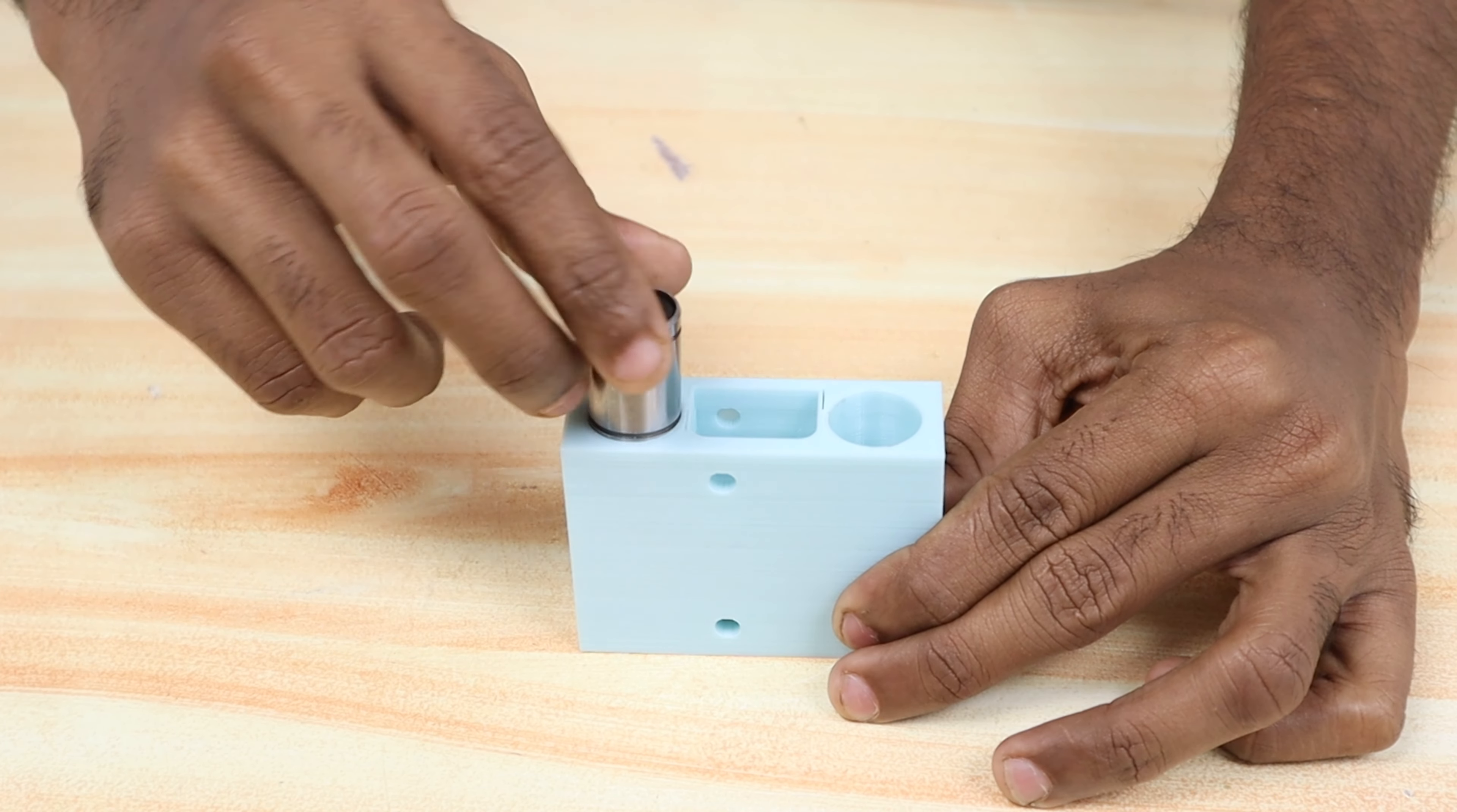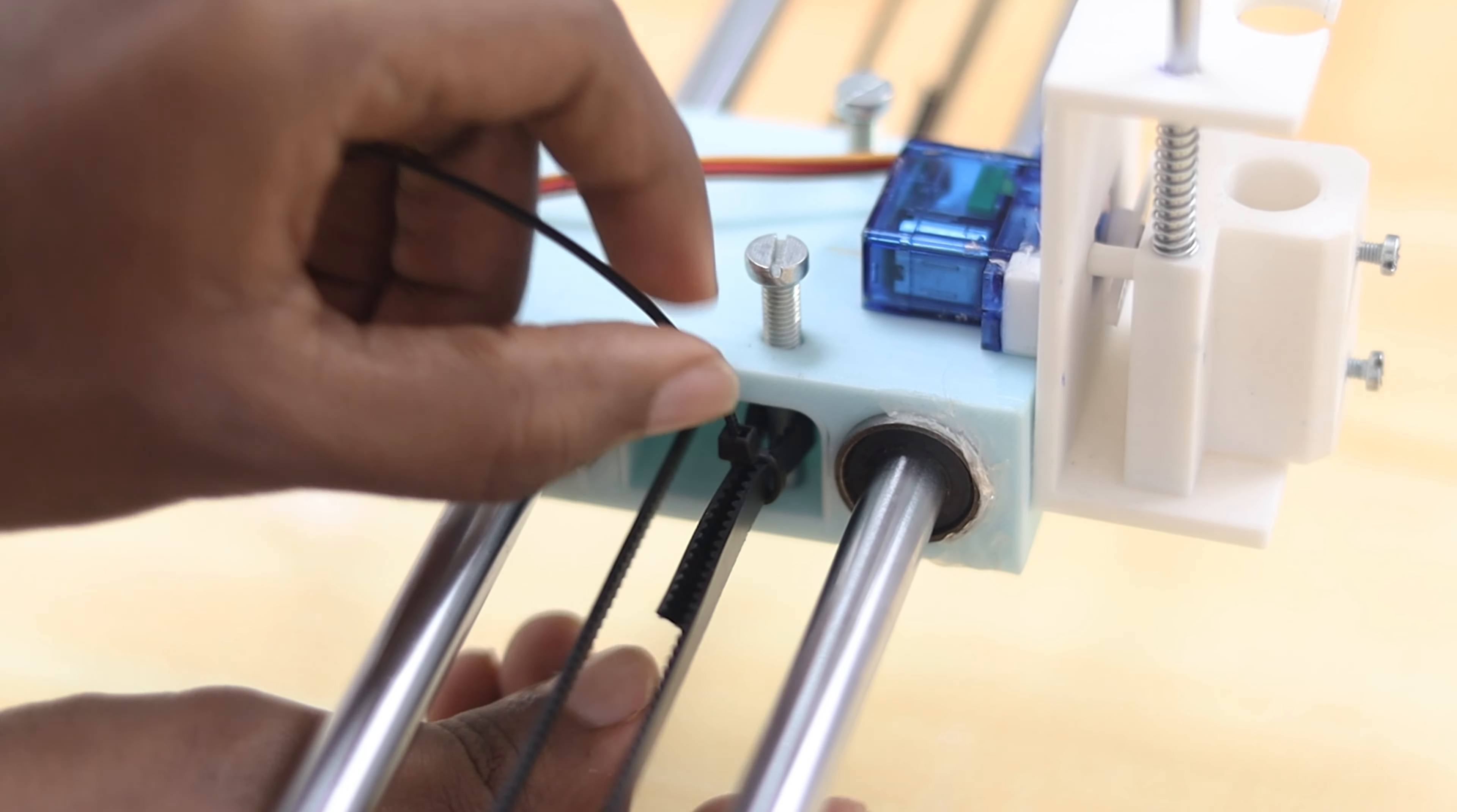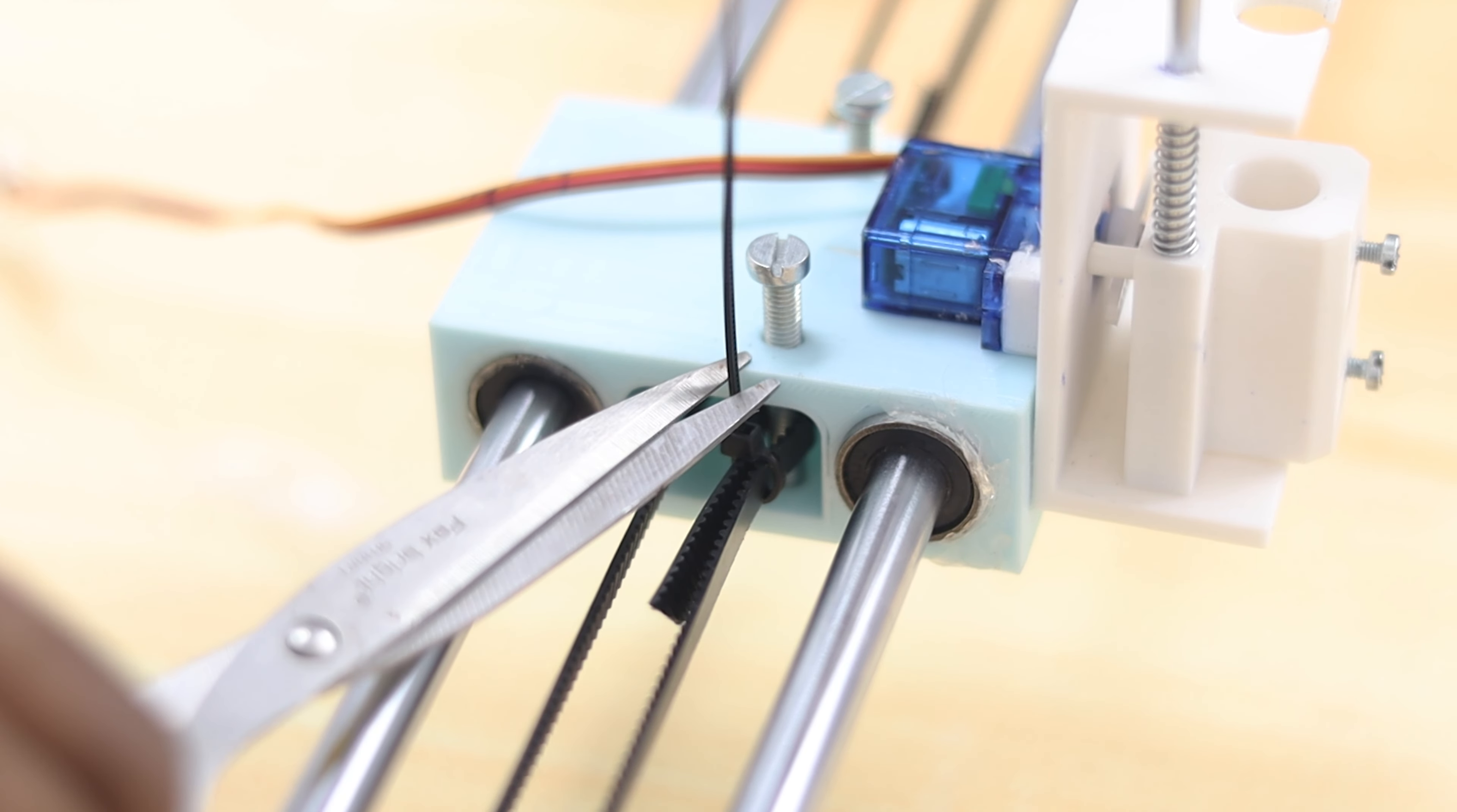Before connecting, we need to prepare the Y axis sliding block by putting two linear ball bearings into it. For securing the belt to the sliding block, we have used two M5 bolts and some zip ties.